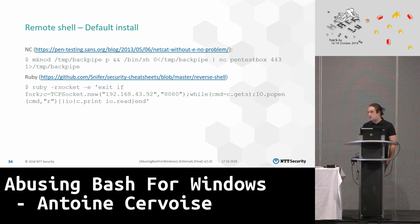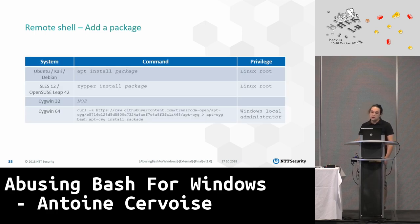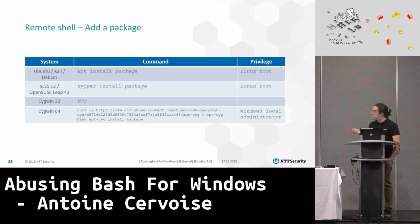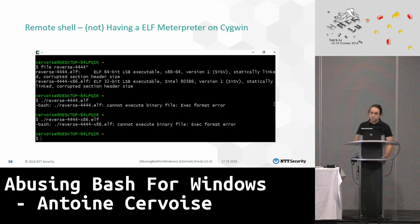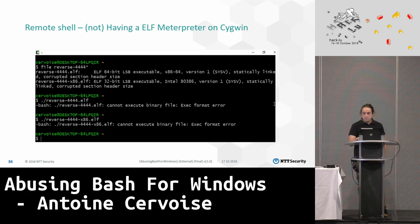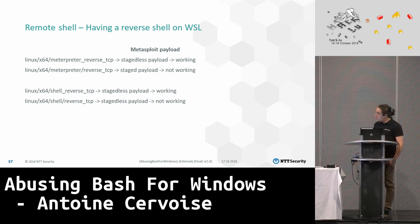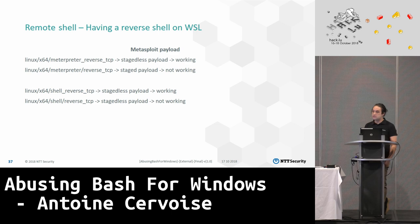If you want to use a reverse shell from a tool that is not installed, you might be able to install it. On WSL it's like a classic Linux — you just need to be root on the Linux side. For Cygwin, you need local administrator privileges, so it can be harder. For the Meterpreter part, Cygwin cannot run ELF so it doesn't work there, but WSL can run ELF. Staged payloads don't work on WSL for unknown reasons, but stageless payloads do.